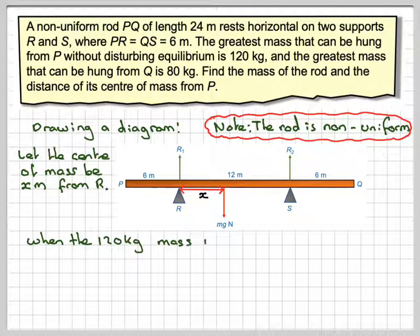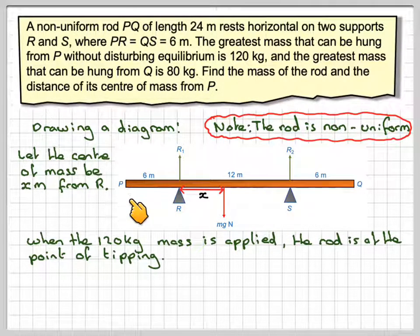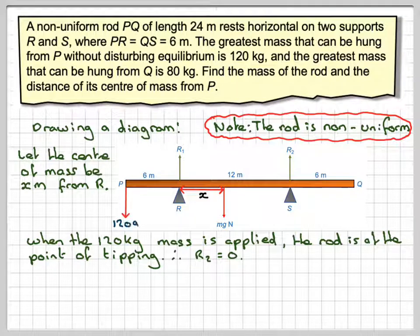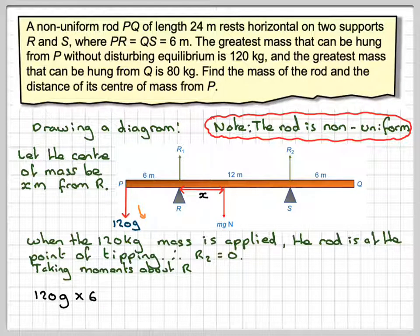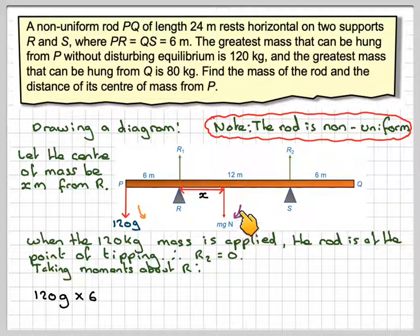When a 120 kilogram mass is applied to the rod at the point, the rod will be at the point of tipping. Therefore any reaction here will be zero, so R2 will be equal to zero. If we're now taking moments about R, then we have 120G times the distance from R which is six. Those are the anti-clockwise. And because the rod is just in equilibrium, the clockwise moment will be Mg times this distance here, X. So 120G times 6 minus MgX is equal to zero.